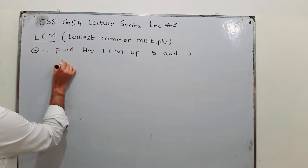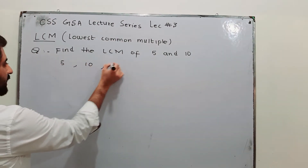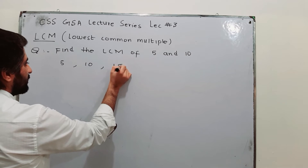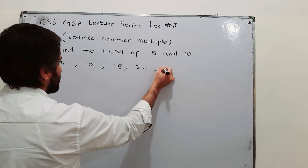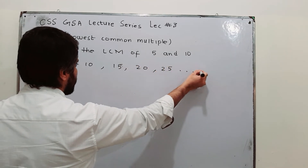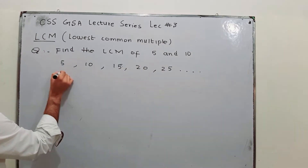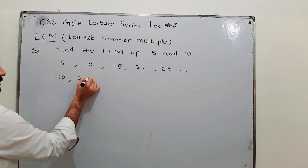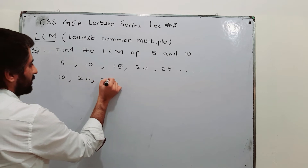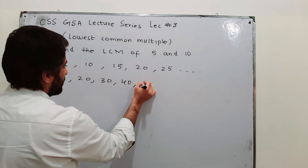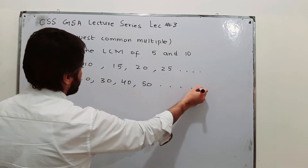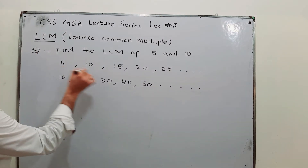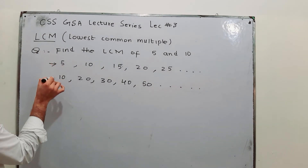Writing down the multiples of 5: 5, 10, 15, 20, 25 and so on. And the multiples of 10 are: 10, 20, 30, 40, 50 and so on. These are the multiples of 5 and these are the multiples of 10.